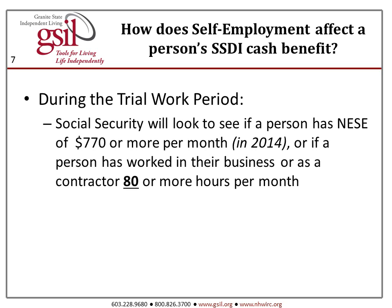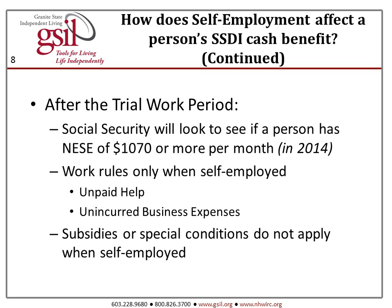How does self-employment affect a person's SSDI cash benefit? During the trial work period, Social Security will look to see if a person has NSEE of $770 or more per month in 2014, or if a person has worked in their business or has a contract at 80 or more hours per month. After the trial work period, Social Security will look to see if a person has NSEE of $1,070 or more per month in 2014. The work rules that apply only when self-employed are unpaid help and unincurred business expenses. Subsidies or special conditions do not apply when self-employed.